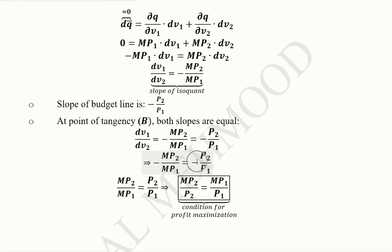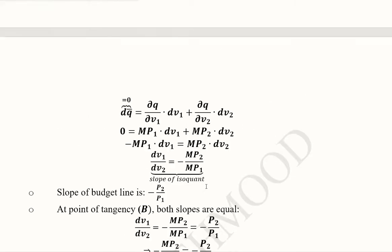We can rearrange them and cancel out the negative sign on both sides, rearranging in a way where we have taken the ratio of the marginal product and the price of one input and then the other input, that is MP1 over P1. If the ratios of the marginal products and the prices of all the factors of production are equal, it is the condition for the output maximization.